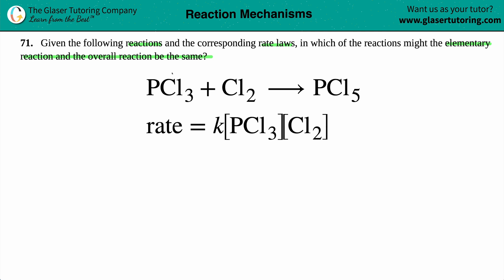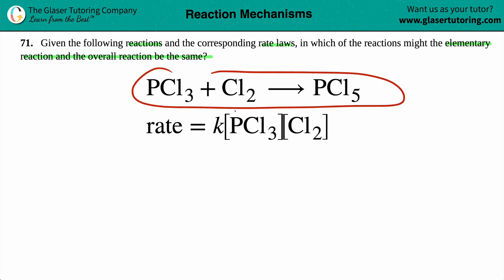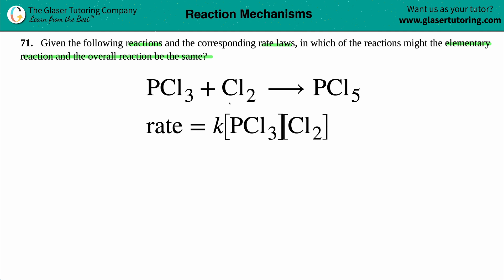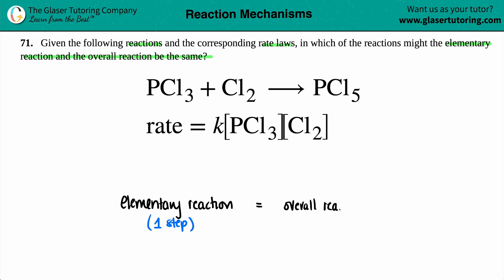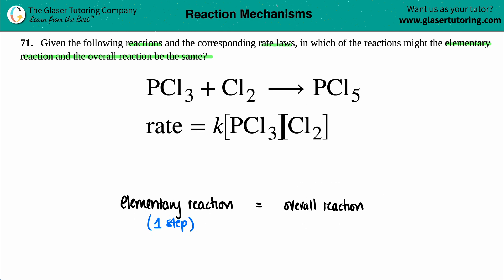The question is: is this elementary reaction the same as its overall reaction? An elementary reaction — I like to call it an elementary step — is only a one-step process. If the elementary step is equal to the overall reaction, that means the reaction ran in only one step. It wasn't a two-step or three-step process; the overall reaction is that one single step.